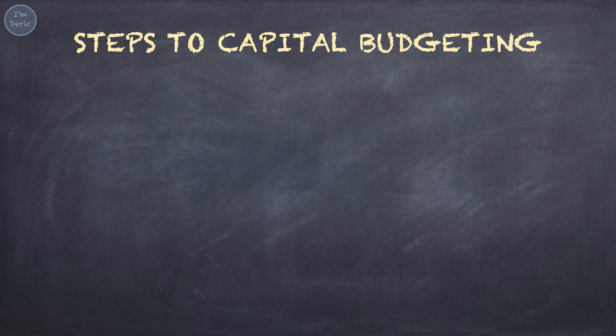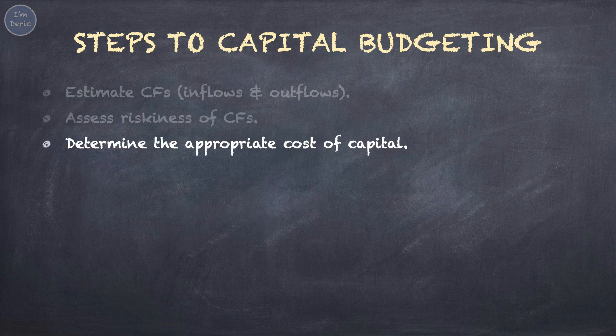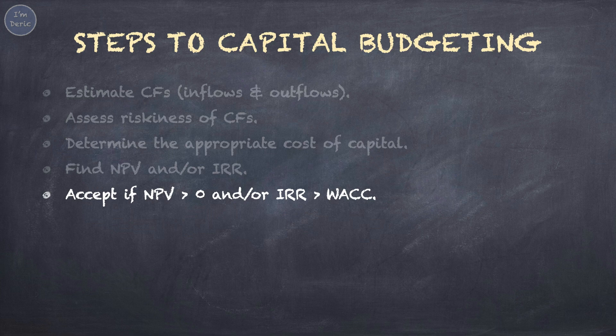The capital budgeting process consists of five steps. First, estimate cash inflows and outflows. Second, assess the riskiness of cash flows. Third, determine the appropriate cost of capital, which is WACC. Fourth, find the NPV and/or IRR. Lastly, accept the investment if the NPV is greater than zero and/or the IRR is greater than the WACC.